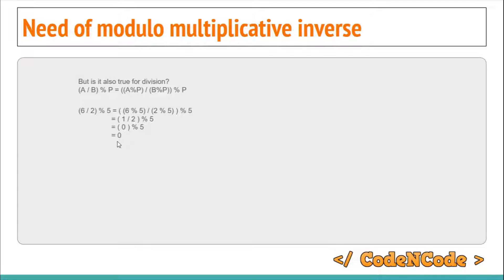This indicates that we can't use the same formula to calculate (a / b) modulo p as we use for subtraction, addition, and multiplication. So how can we calculate this? What is the workaround for this problem?